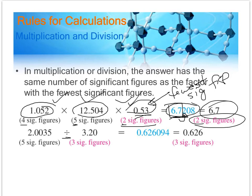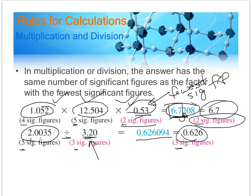The same rule applies for dividing. If the first number has 5 sig figs and the second has 3 — the fewest — your answer can only have 3 sig figs. Go to the number your calculator gives, include the first 3 sig figs: 0.626. Check the first digit to the right of the last digit you kept — since it's a 0, you don't round up. So the final answer is 0.626.